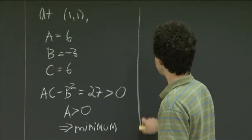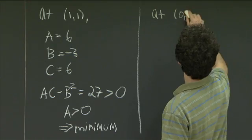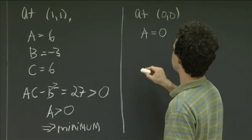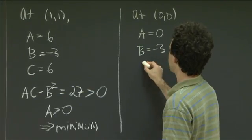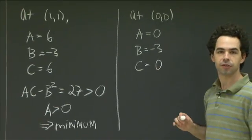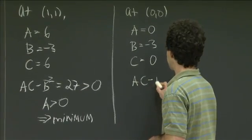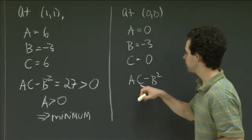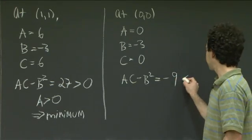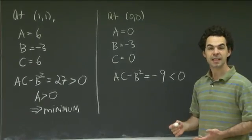Now we do the same thing for the critical point (0, 0). Recall a was 6x, so at (0, 0), a equals 0. b was equal to negative 3 everywhere. And c was 6y, so at (0, 0) that's also 0. So ac minus b squared equals 0 times 0 minus 9, which equals negative 9. Since negative 9 is less than 0, and when ac minus b squared is less than 0 we have a saddle point, the critical point (0, 0) is a saddle point.